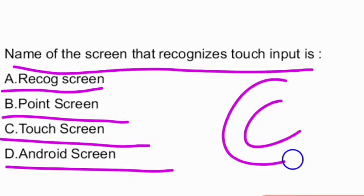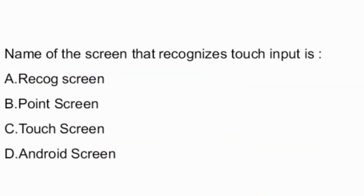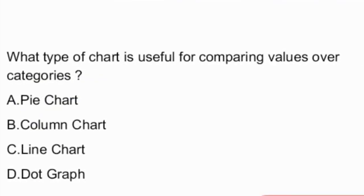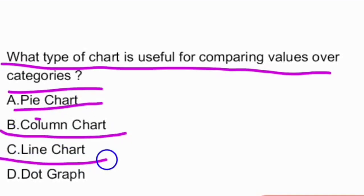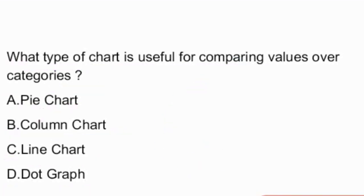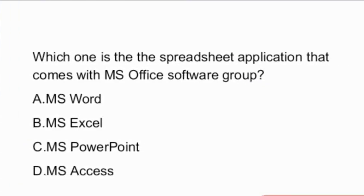The options for the screen that recognizes touch input are: record screen, point screen, touch screen, android screen. And the answer is option C — touch screen. Next question: what type of chart is useful for comparing values over categories? The options given are: pie chart, column chart, line chart, dot graph.